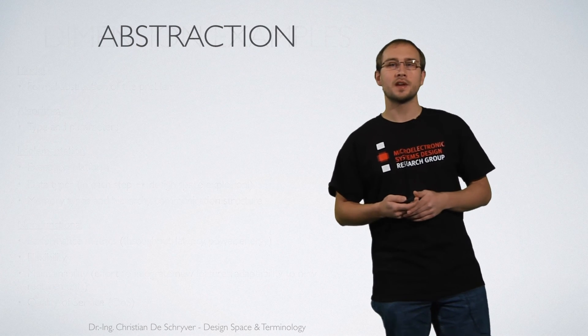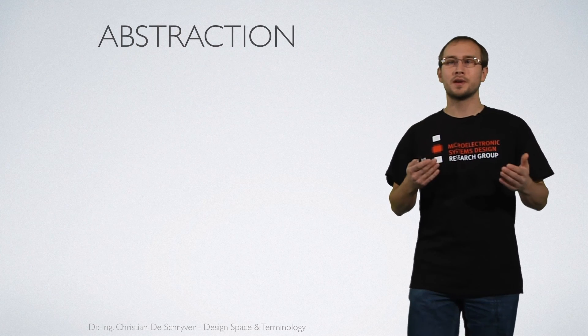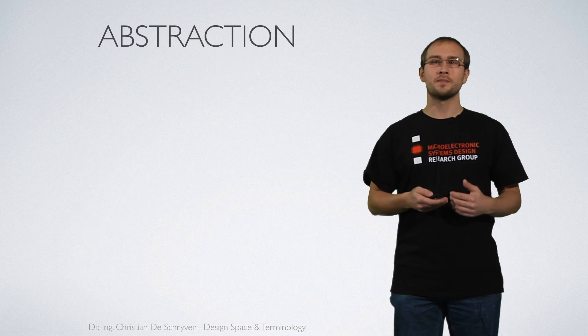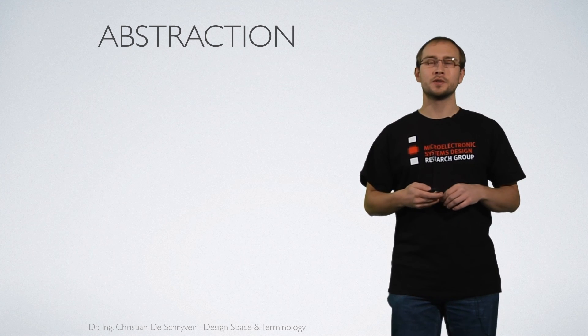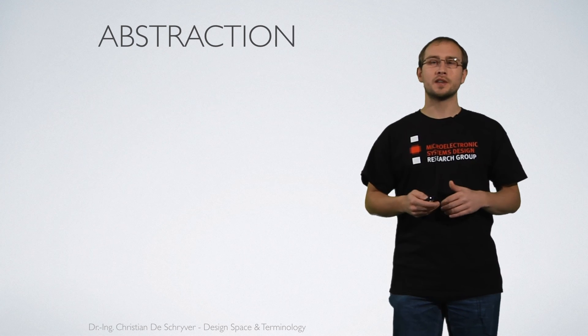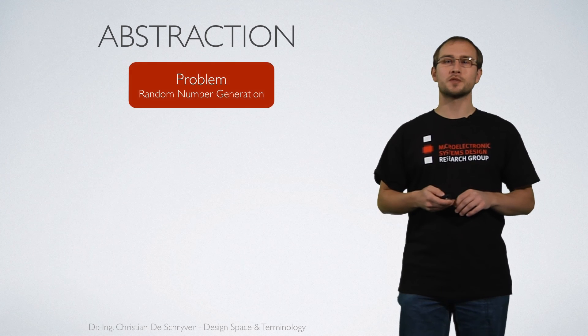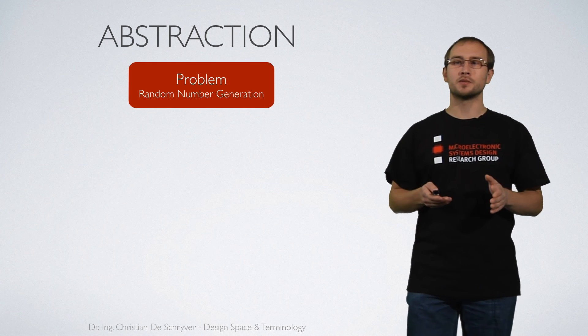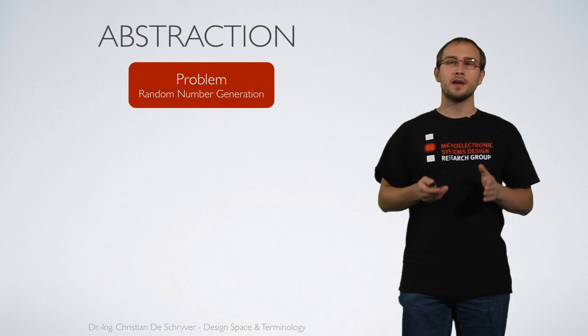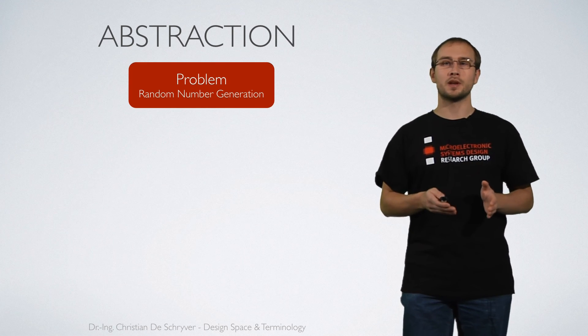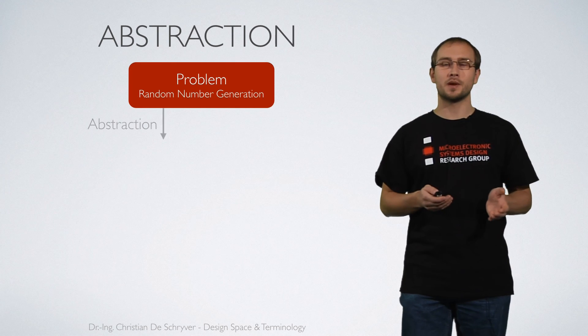We can consider this as some kind of abstract process when we move through the design space and this is helpful to separate between different terms. Therefore let me propose a strategy how we introduce abstraction when navigating through the design space. In the very beginning we have a problem that we want to solve with the system. In our case this problem is random number generation.